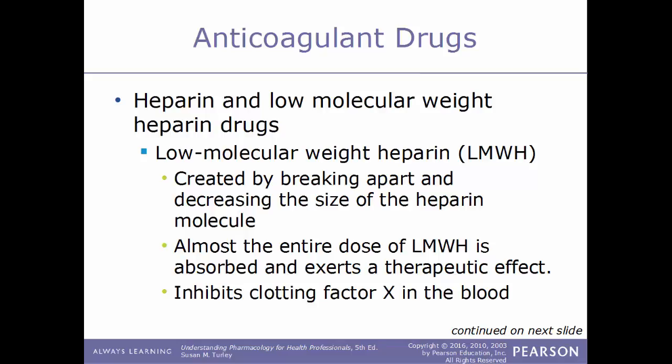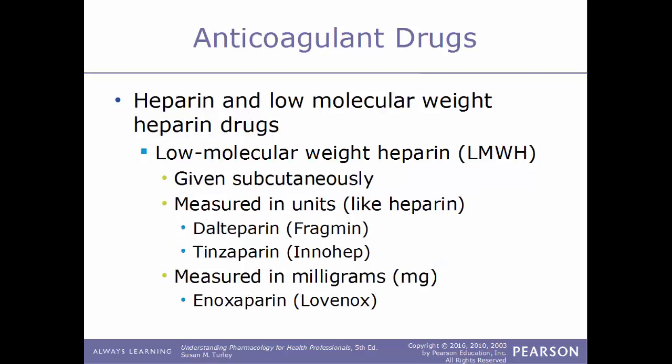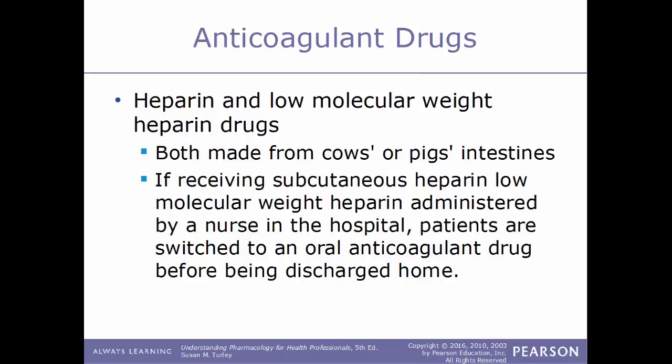Low molecular weight heparin, or LMWH, is created by breaking apart and decreasing the size of the original heparin molecule. By doing so, almost the entire dose of LMWH is absorbed and exerts a therapeutic effect. Like heparin, it acts to inhibit clotting factor number 10. LMWH is given subcutaneously and can be measured in units or milligrams. Examples measured in units include dalteparin (trade name Fragmin) and tinzaparin (trade name Innohep). Enoxaparin, measured in milligrams, is sold under the trade name Lovenox.